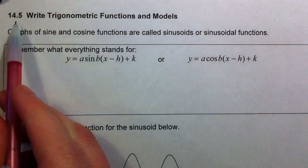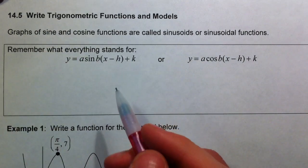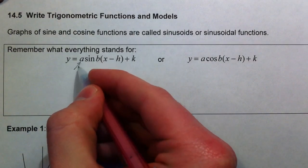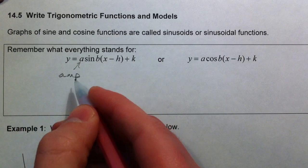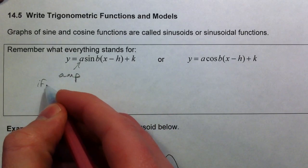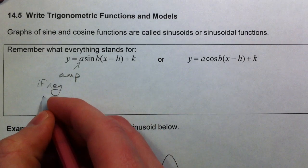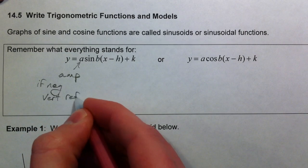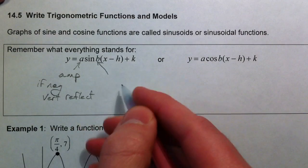All right, so what we're going to do is write all the trig functions given a graph or given certain things that we know about it. Just to remember real quick: the 'a' out in front is the amplitude, and if it's negative it flips it over — a negative 'a' means a vertical reflection.